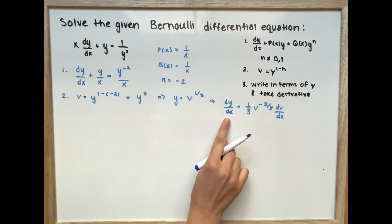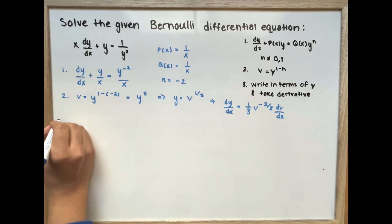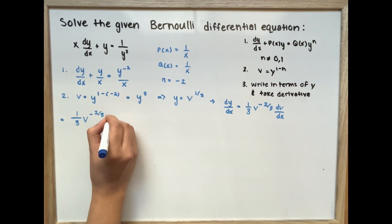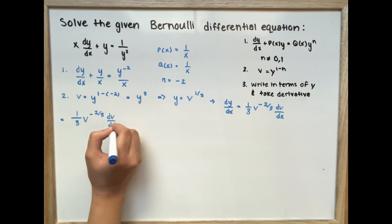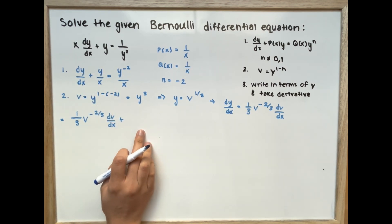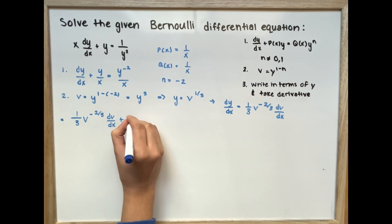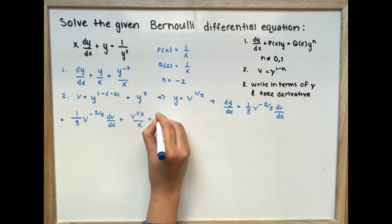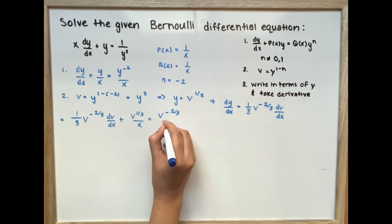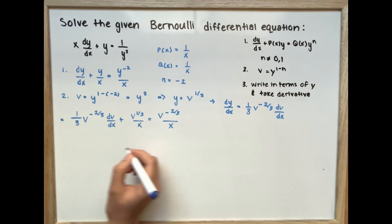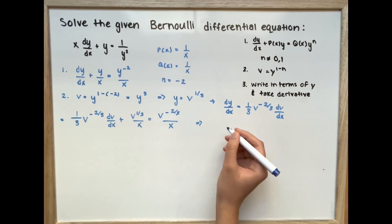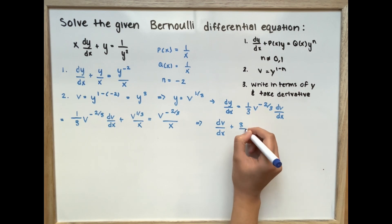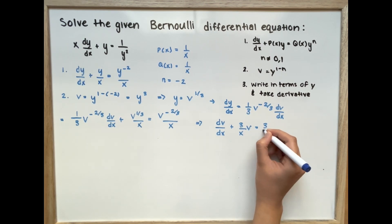We substitute y as v to the power of 1 third, and similarly substitute the y on the right side, giving v to the power of negative 2 thirds divided by x. After simplifying, this becomes dv over dx plus 3 over x times v equals 3 over x.